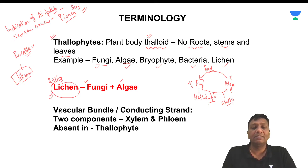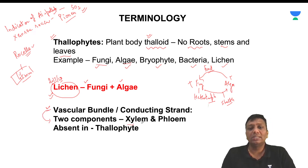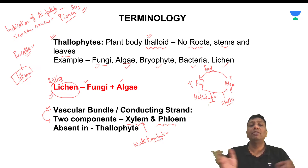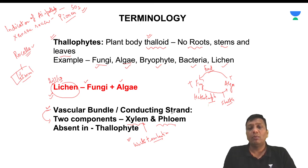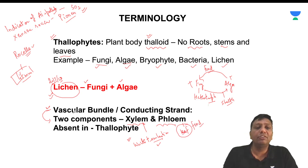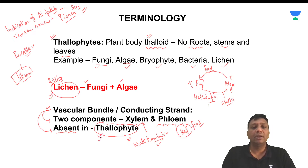Plants also have important features like vascular bundles or conducting strands. Vascular bundles have two components: xylem and phloem. Xylem is for water translocation — plant roots absorb water and through the xylem it disperses everywhere in the plant body. Phloem is for food translocation — food synthesized in the leaves is distributed everywhere in the plant body through the phloem. In which group of plants are xylem and phloem absent? The answer is Thallophyta.